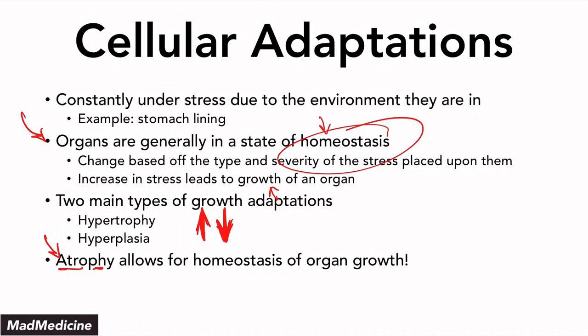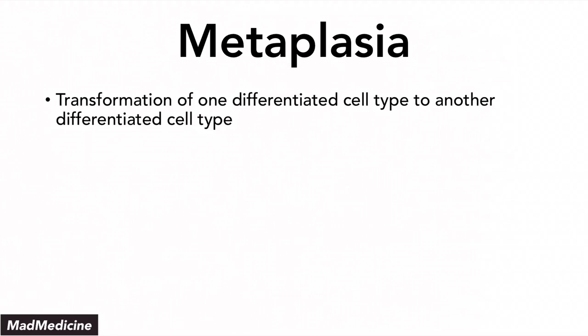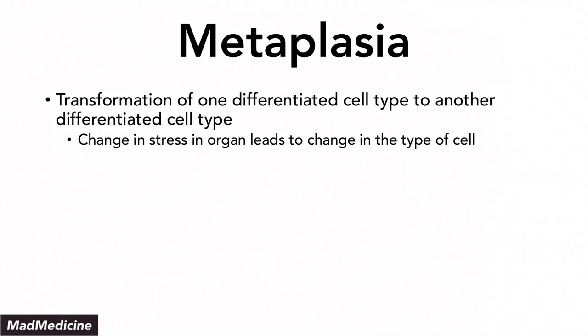But if the stress does not go away — if it's constant — then hypertrophy and hyperplasia together are not enough, and the organ still isn't functioning properly. One thing an organ can do to manage that stress is undergo a change in the cells themselves, and that change is called metaplasia. This is a type of stress past hypertrophy and hyperplasia — so constant and regular that the organ must go through metaplasia to remain functioning and normal.